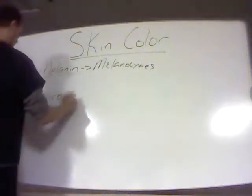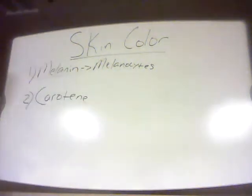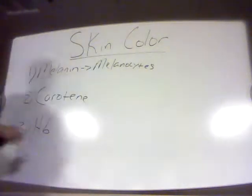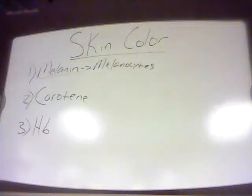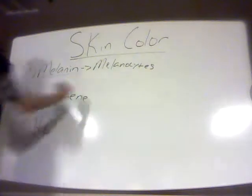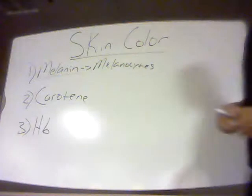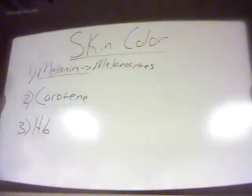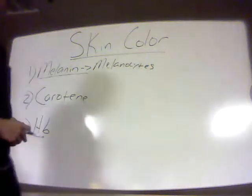Another source of skin color is carotene, and the other is hemoglobin, abbreviated HB. The different combinations of melanin and carotene mainly influence the color of one's skin. Melanin is the pigment that naturally arises from skin, while these other two sources come from the bloodstream and fat and other tissues that also influence skin color.